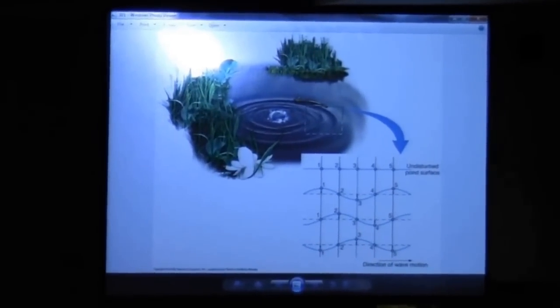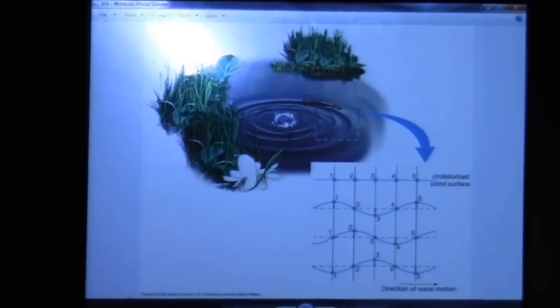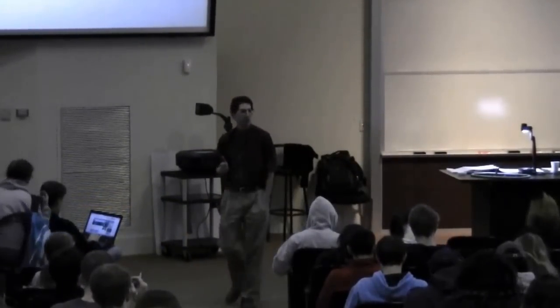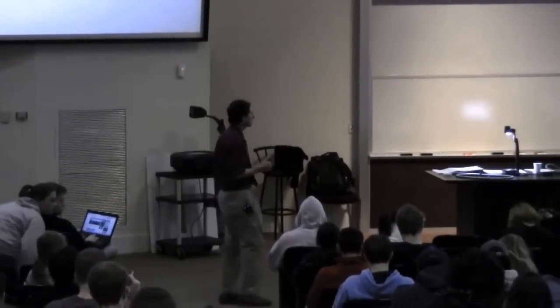On to Lesson 3. Now in Lesson 1 we talked about the motions of the celestial sphere, the sun, the moon, the rotation of the earth, and how we see all those things.